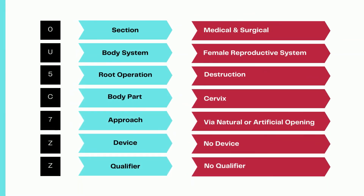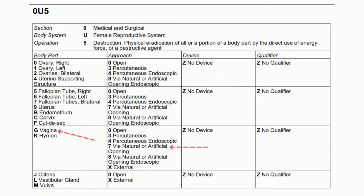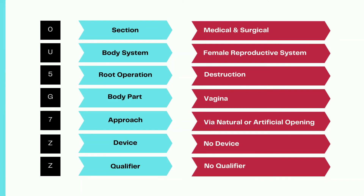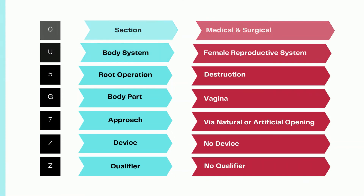The code for destruction of condyloma of the cervix is 0U5C7ZZ. For the second condyloma, using the same medical and surgical, female reproductive system, destruction table, the fourth character changes to G for vagina, the fifth character remains 7 for via natural or artificial opening, and the sixth and seventh characters are Z — no device, no qualifier. The code for destruction of condyloma of the vagina is 0U5G7ZZ. The only difference between the first and second codes is the body part value.